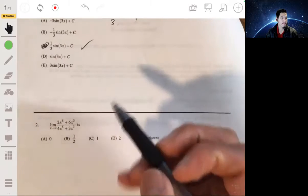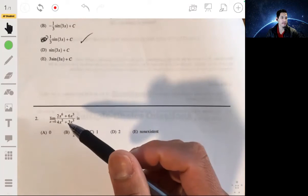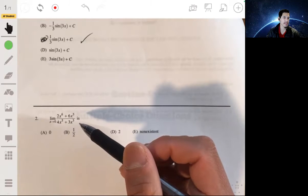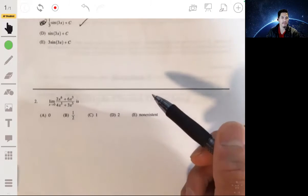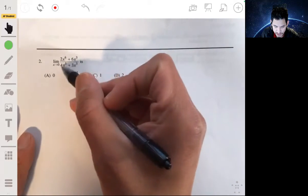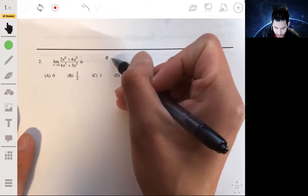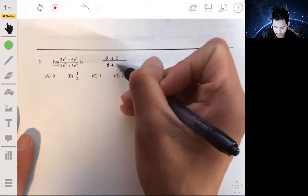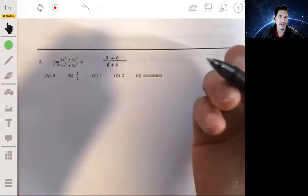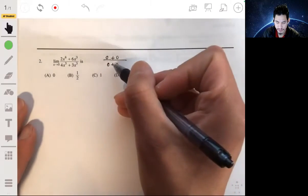Problem two, the limit of 2x to the sixth plus 6x cubed over 4x to the fifth plus 3x cubed. There's a couple different ways to approach this, because if you were to plug in zero straight into this, you would get zero plus zero over zero plus zero. So you would get an undefined expression, an indeterminate form.